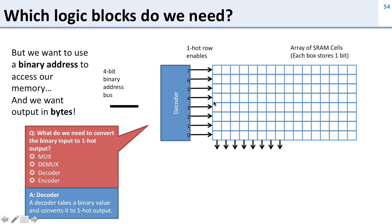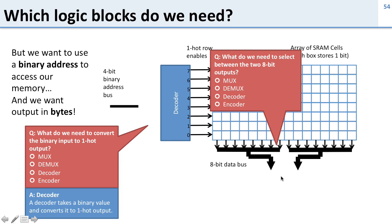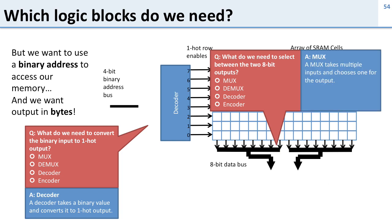Now if we look at the bottom here, for every row that we activate we read out the first eight bits but we also read out the second eight bits at the same time. So we're reading out 16 bits at a time but we said we want this memory to read out one byte just eight bits at a time. So how do we fix that? Well we've got two eight-bit data buses coming out of here and now the question is what do we need to select between the two eight-bit outputs? Well here we need a MUX and this is exactly what a MUX does. The MUX is going to take two inputs here, these two eight-bit inputs, and it's going to choose one of them and generate a single eight-bit data output.